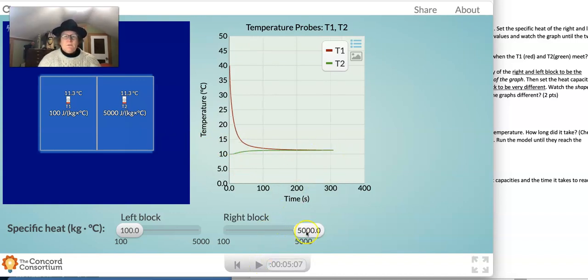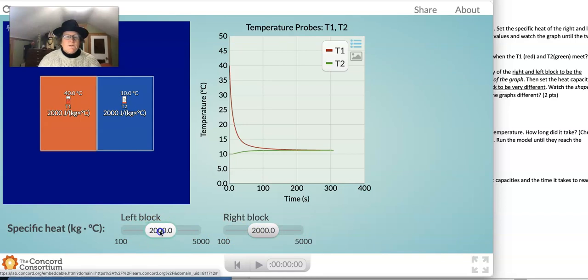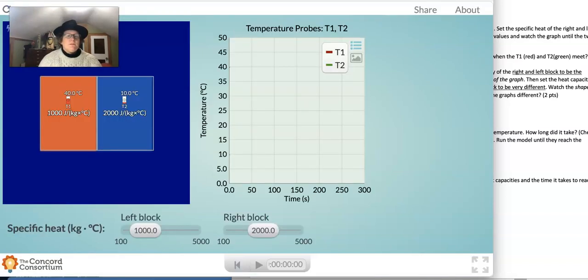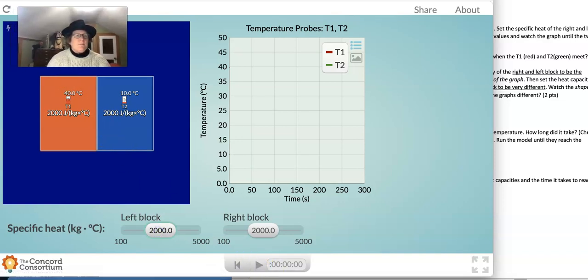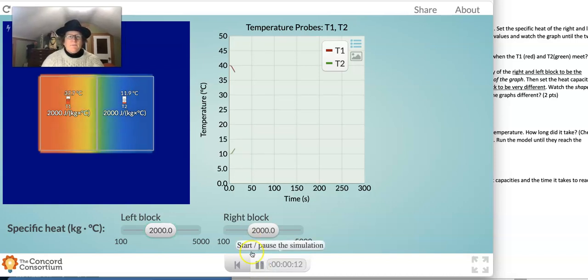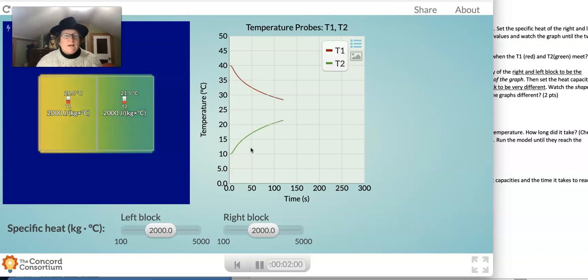Let's look at what happens when we set them to about the same. So we'll set it to 2000 and to 2000 and look at the shape of this graph. Let's reset it here before we do that. The reset button is up in the corner. It's the little curly Q arrow. Let's hit play. You notice the graph is symmetrical. So both the red and the green line are cooling at the same rate because both of these blocks have the same specific heat this time. And our graph just looks like you took a piece of paper and folded it in half and created two perfectly symmetrical lines.